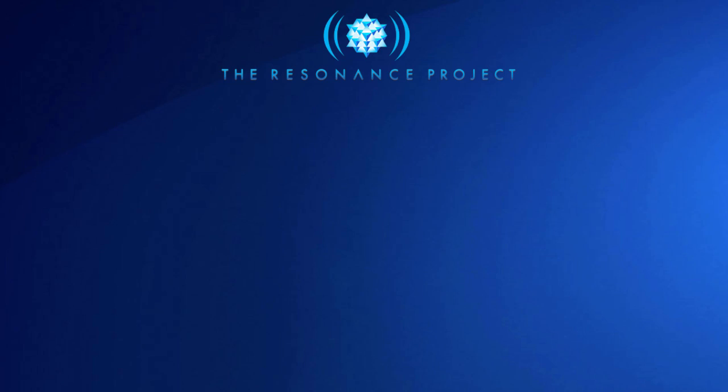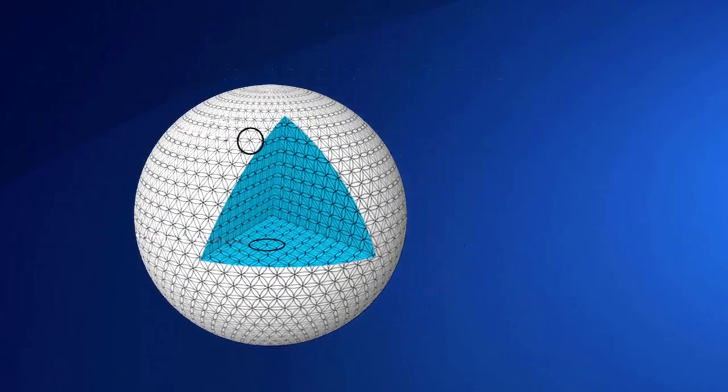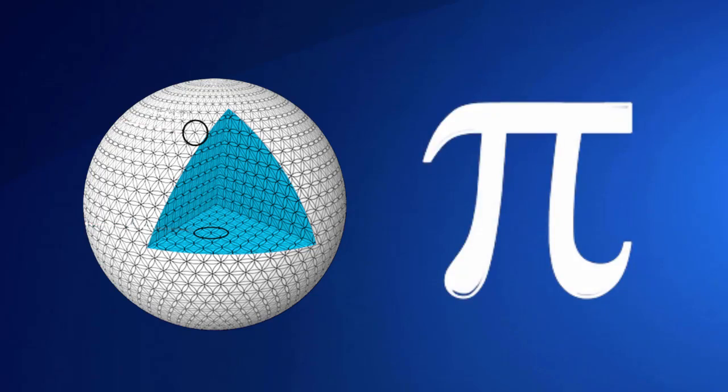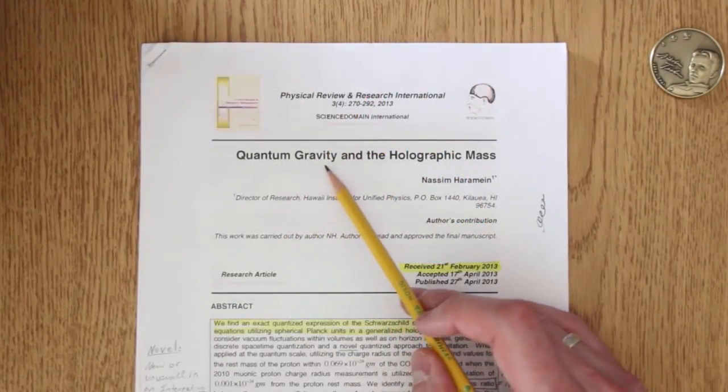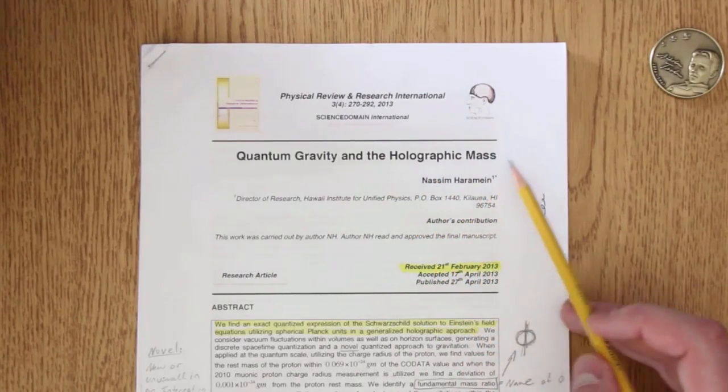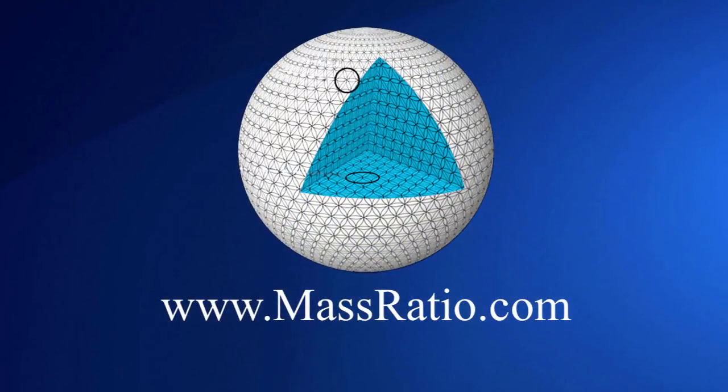The Resonance Project in Hawaii have made a new discovery. They have discovered a new mathematical constant, kind of like Pi. But this new constant is called the quantum gravity and the holographic mass ratio. But we'll just call it the mass ratio for short.